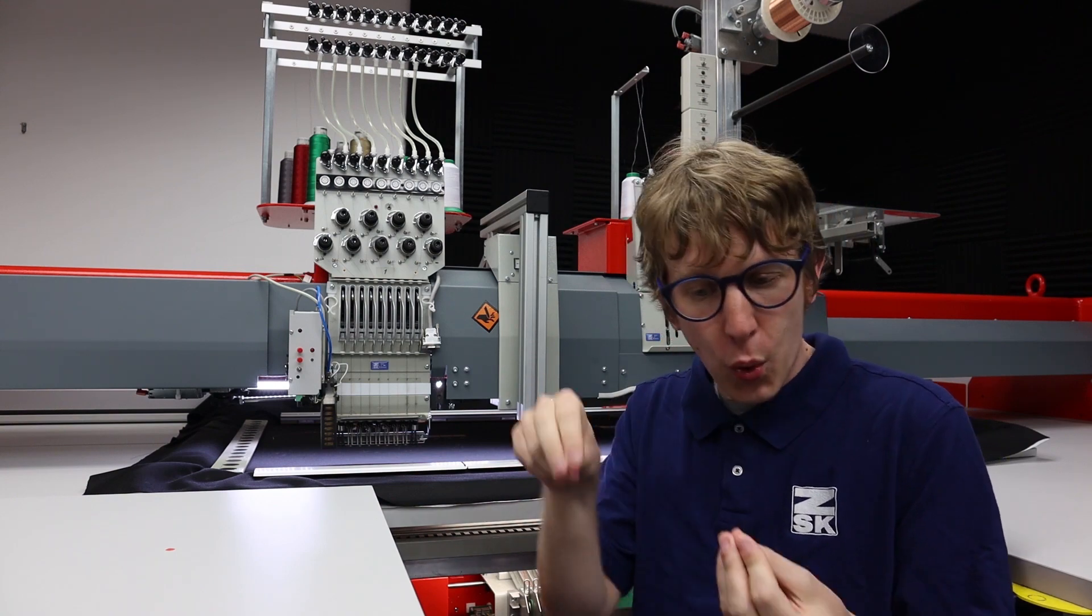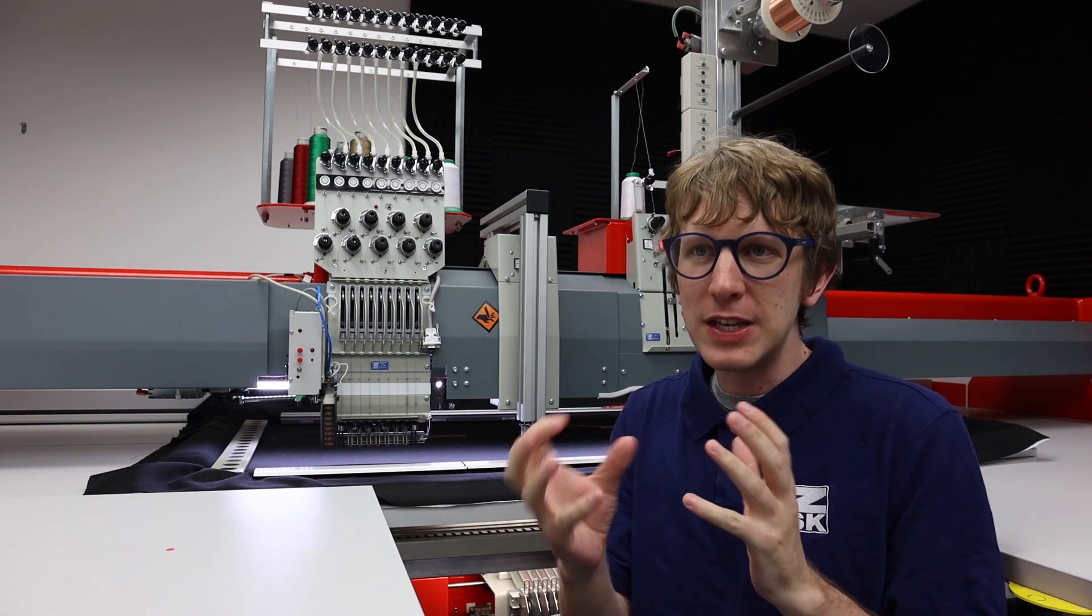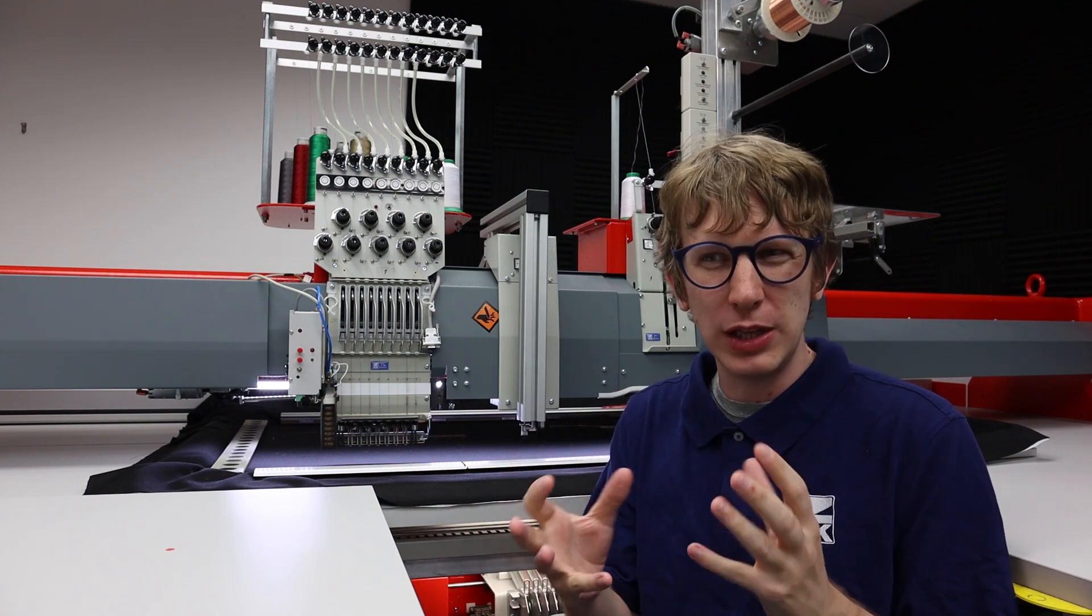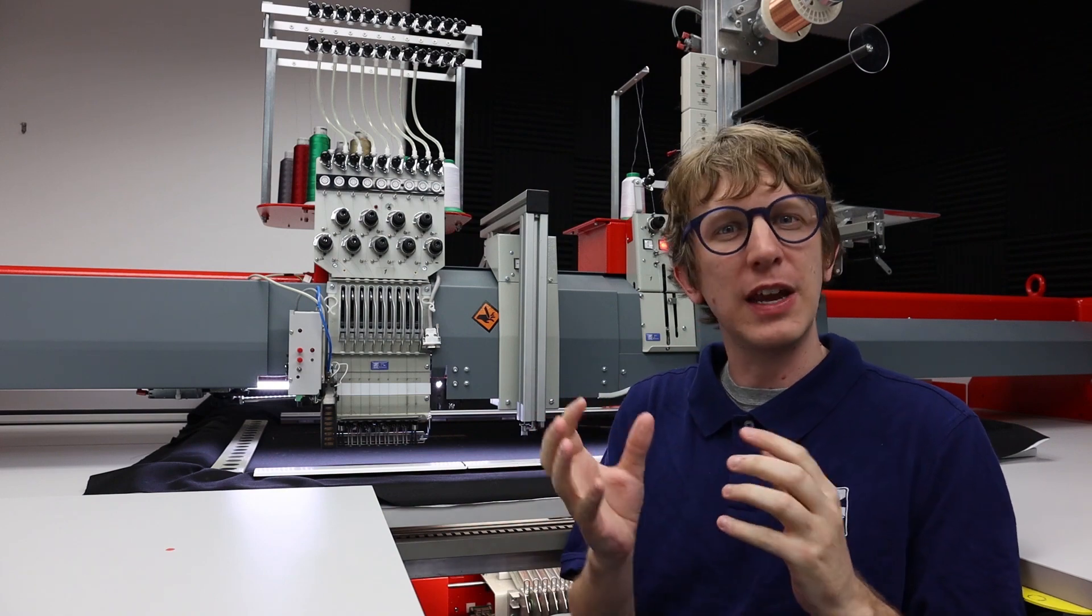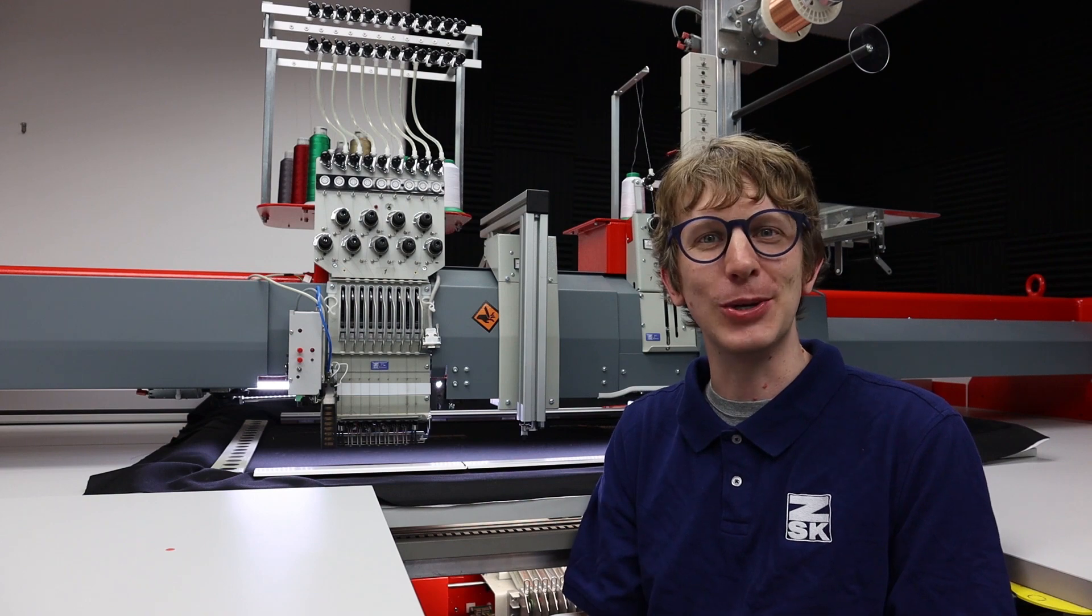We also have the ability to put cords down as well as other different attachments like beading devices. A lot of these different attachments allow us to really look at new ways of interfacing new technologies with embroidery, increasing the amount that the machine can do.